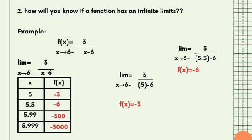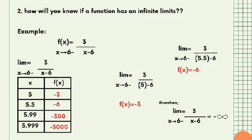As you can see, as X approaches 6 from the left, the values of f(x) are decreasing without bound. So the limit of 3/(x − 6) as X approaches 6 from the left is equal to negative infinity.